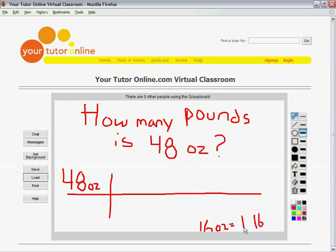So since we have this conversion, we're going to put 16 on the bottom so that the ounces will cancel out. And we're going to put 1 pound on top. Now we should see ounces cancel out. And this is 48 divided by 16, which is equal to 3 pounds.